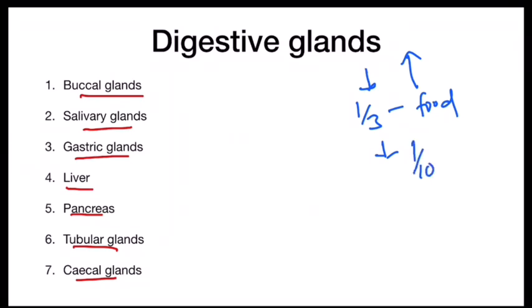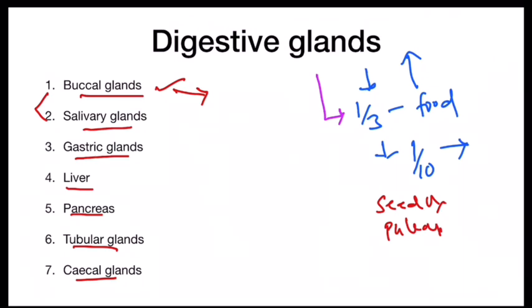The first type of glands are the buccal glands, present in the buccal cavity. They secrete mucus. Birds eat seeds, pulses, and sometimes small organisms. These seeds and pulses are hard to make into pieces in the buccal cavity, as the mouth doesn't have teeth, so they cannot be masticated. Due to the mucus secretions in the buccal cavity, the seeds and pulses get moistened and become soft.